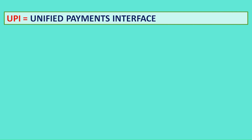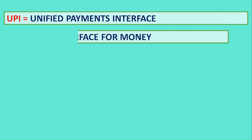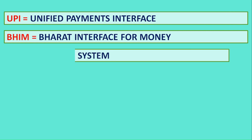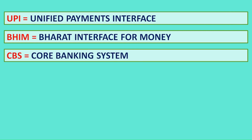UPI: Unified Payments Interface. BHIM: Bharat Interface for Money. CBS: Core Banking System.